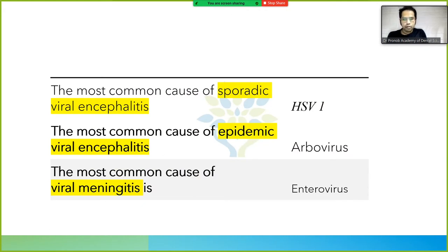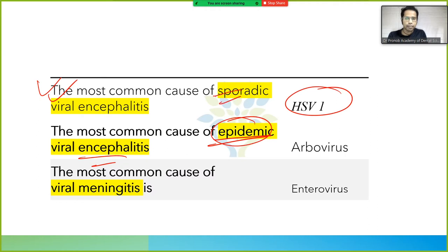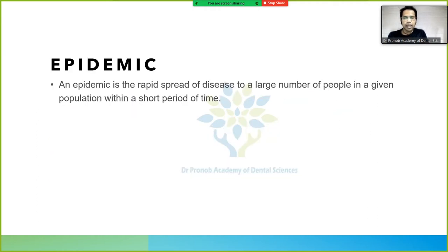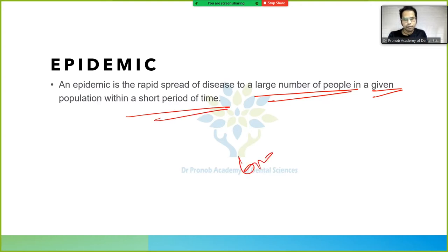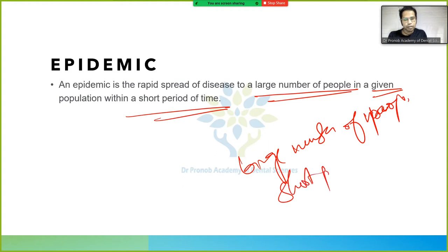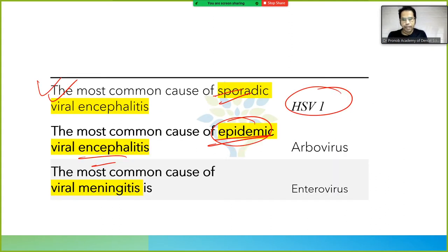The most common cause of epidemic viral encephalitis is arbovirus. Epidemic means rapid spread of disease to a large number of people in a given population within a short period of time.